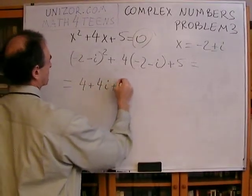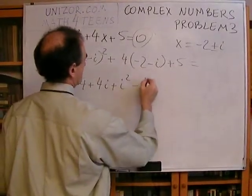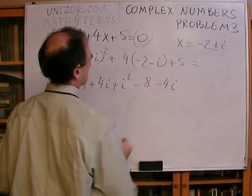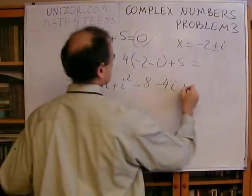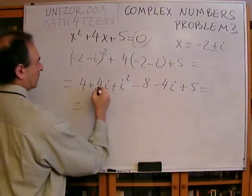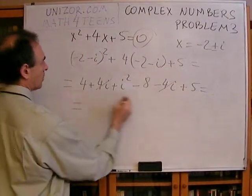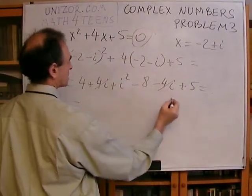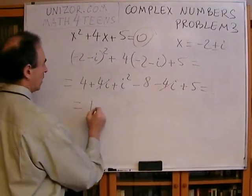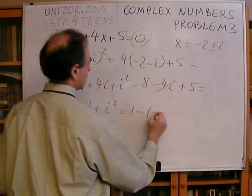So x squared, that's this guy, minus 8 minus 4i plus 5 equals 4i minus 4i is 0. 4 minus 8 plus 5 is 1, plus i squared, 1 minus 1, 0.